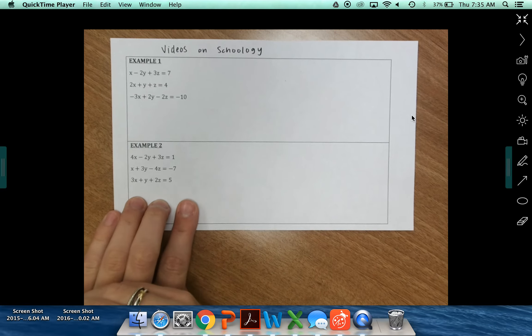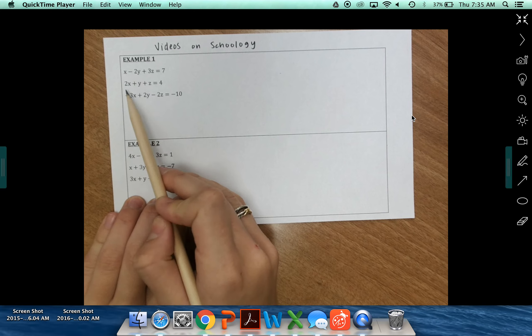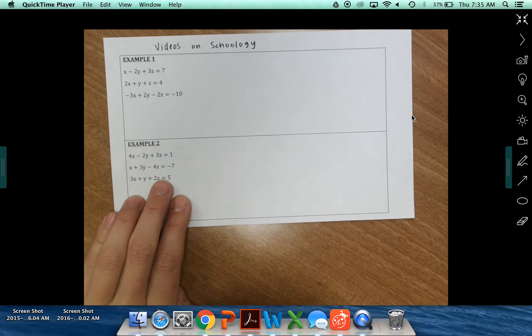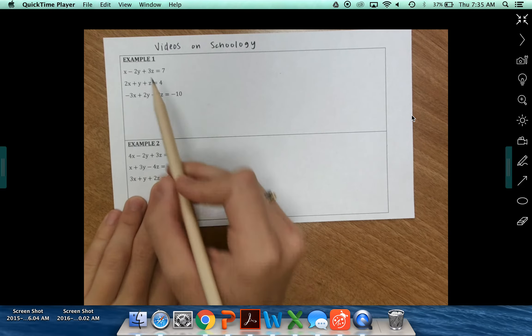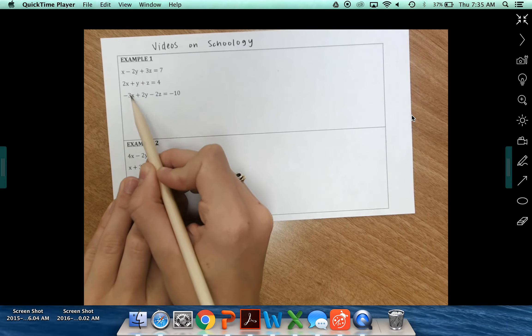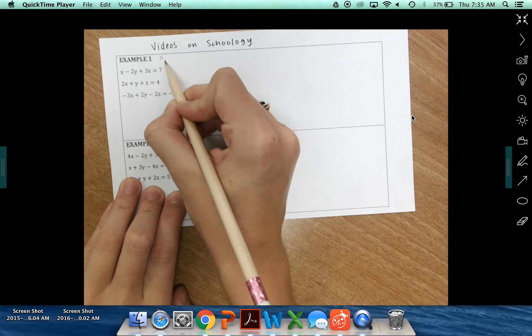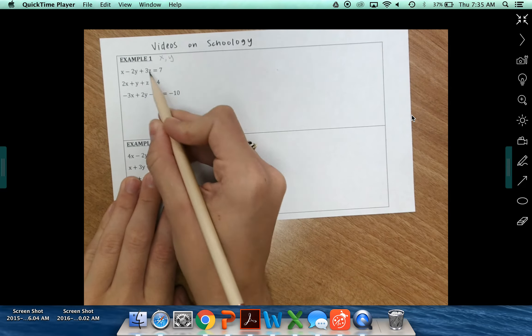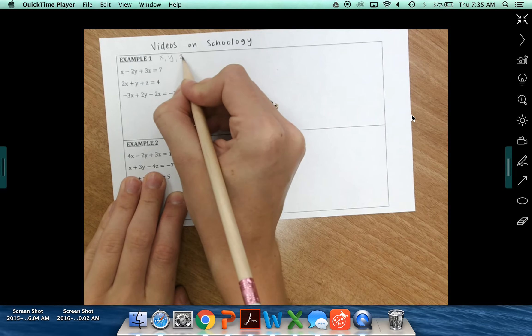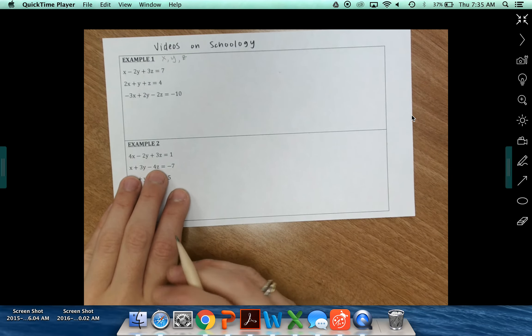One of the most important things to recognize here is that our variables in each equation are coming in at the same order. We have our X terms first, we have our Y terms second, and then we've got our Z terms last. So you've got to make sure that your variables, your terms are falling in the correct order.